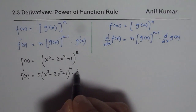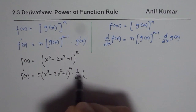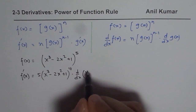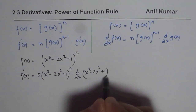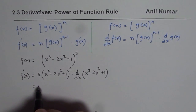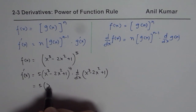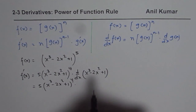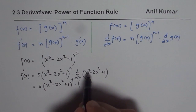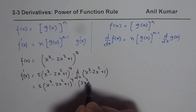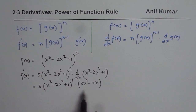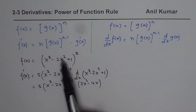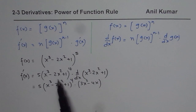What I mean is d/dx of the inside function, which is x cubed minus 2x squared plus 1. So what we get here is 5 times x cubed minus 2x squared plus 1, to the power of 4, times the derivative of this, which is 3x squared minus 4x. So that is how you can find the derivative using the power of a function rule.